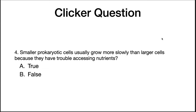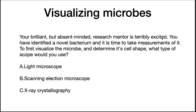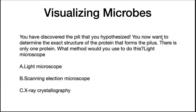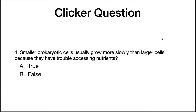Smaller prokaryotic cells usually grow more slowly than larger cells because they have trouble accessing nutrients — true or false? The answer to the first question is you would use a light microscope to determine general cell shape. To look at something smaller such as pili, an appendage on the outside of the cell, you would use a scanning electron microscope for higher resolution. To figure out the structure of a protein, you would use X-ray crystallography. And finally, that last statement is false — smaller organisms can actually grow faster because they can get more nutrients from the environment and move molecules through their cells more quickly.